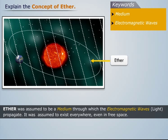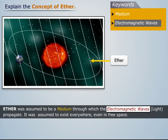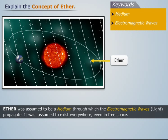Ether was assumed to be a medium through which electromagnetic waves propagate. It was assumed to exist everywhere, even in free space.